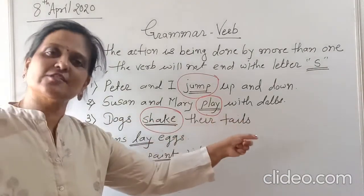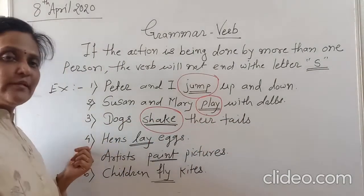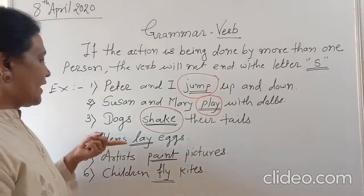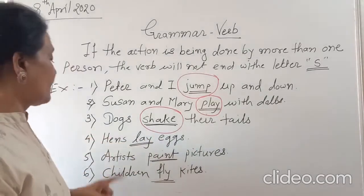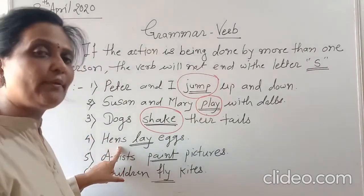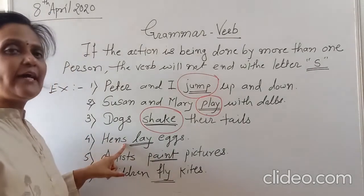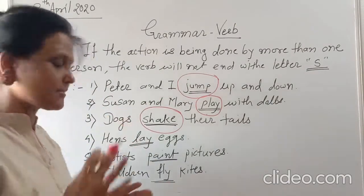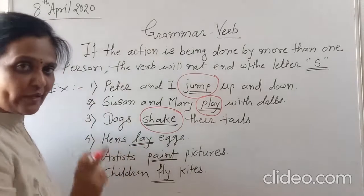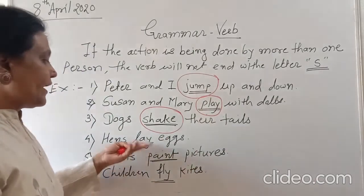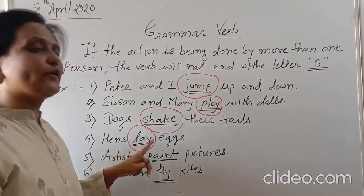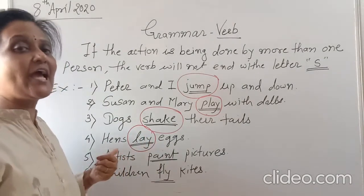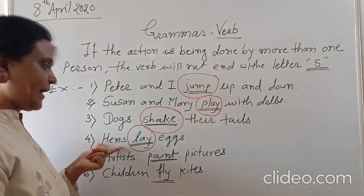Another example is: Hens laid eggs. Hens — more than one hen. Hens is a plural noun. There is an 's' added to this noun — hens — meaning many hens, more than one hen. What are the hens doing? They lay eggs. Lay is the action word. We cannot use 's' here — because in this sentence there are many hens, more than one. Hence hens laid eggs.